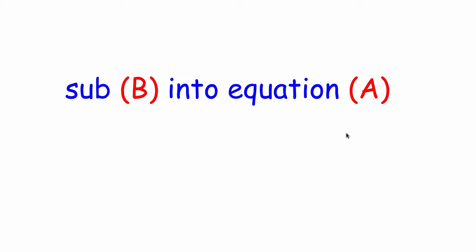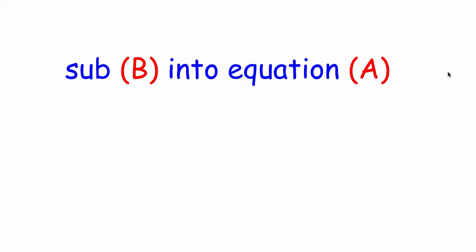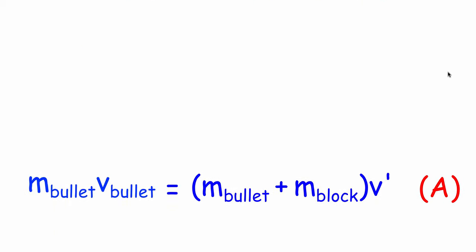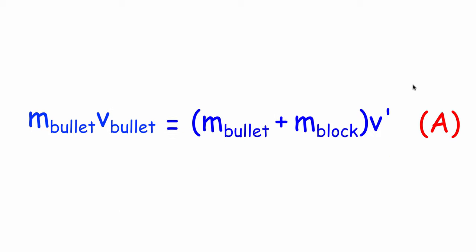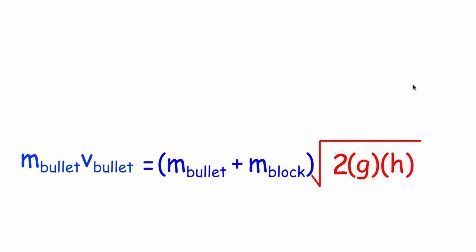What we want to do is take Equation B and substitute it into Equation A. Remember, v_bullet was unknown and v prime was also unknown. By substituting in v prime with the square root of 2gh, we have now eliminated that unknown and all we're left with is v_bullet.